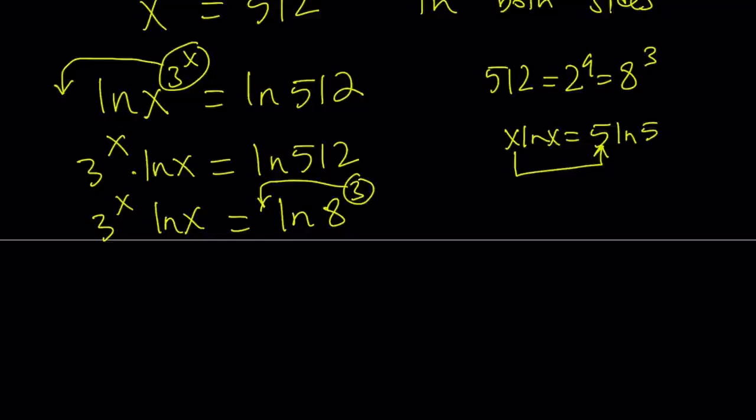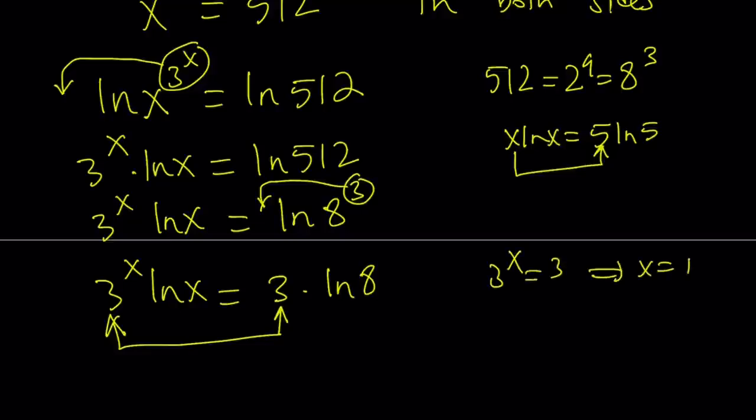That doesn't necessarily mean it's the only solution. We still have to check if there are any other solutions. And in some cases, there are. Now, so we're going to do something similar. 3 to the x ln x equals 3 times ln 8. So comparing these two things, I noticed that I do want 3 to the power x to be 3 in order to get some type of correspondence. And that implies x equals 1. And at the same time, I want ln x to be ln 8, which implies that x equals 8. But these two facts contradict each other. Therefore, this method is not going to work.